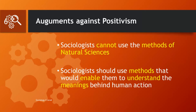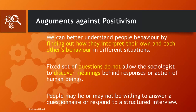In short, interpretivists, who we call the anti-positivists, argue that sociologists cannot use the methods of natural sciences. Sociologists should use methods that would enable them to understand the meaning behind human action. The anti-positivists are against the use of quantitative methods because they believe we can only understand people's behaviour by finding out how they interpret their own and each other's behaviour in different situations. Using a fixed set of questions will not allow sociologists to discover such meanings behind human behaviour.